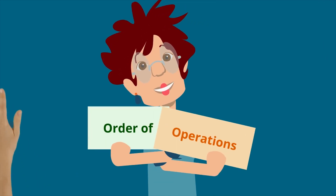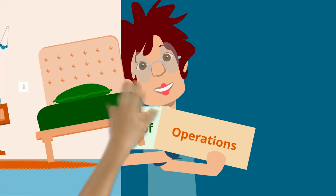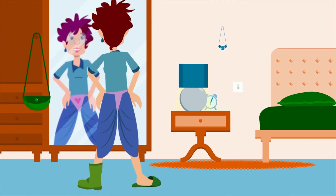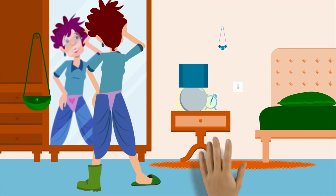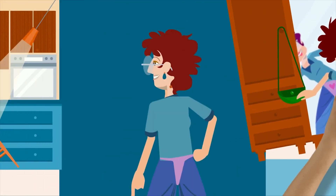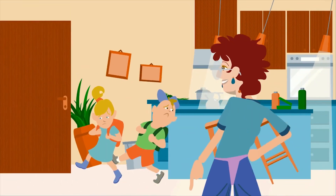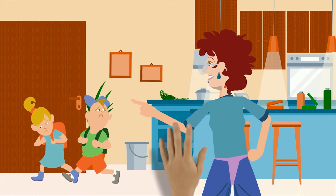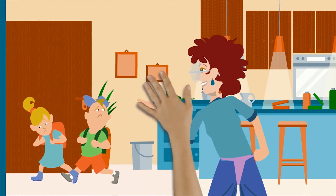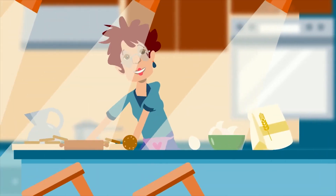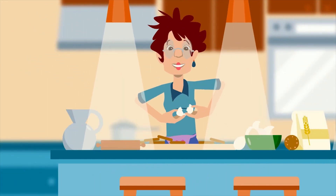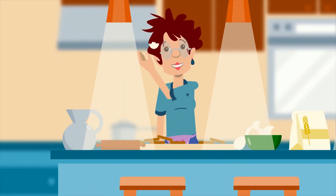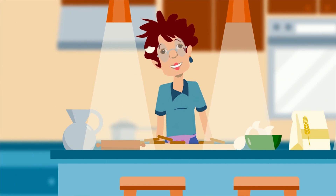Yesterday, my dear Aunt Sally did everything in the wrong order. She put her underpants above her skirt, she sent us to school, then she made our breakfast after we left. Later, she baked cookies, but added the eggs in after the cookies came out. My dear Aunt Sally did everything in the wrong order.